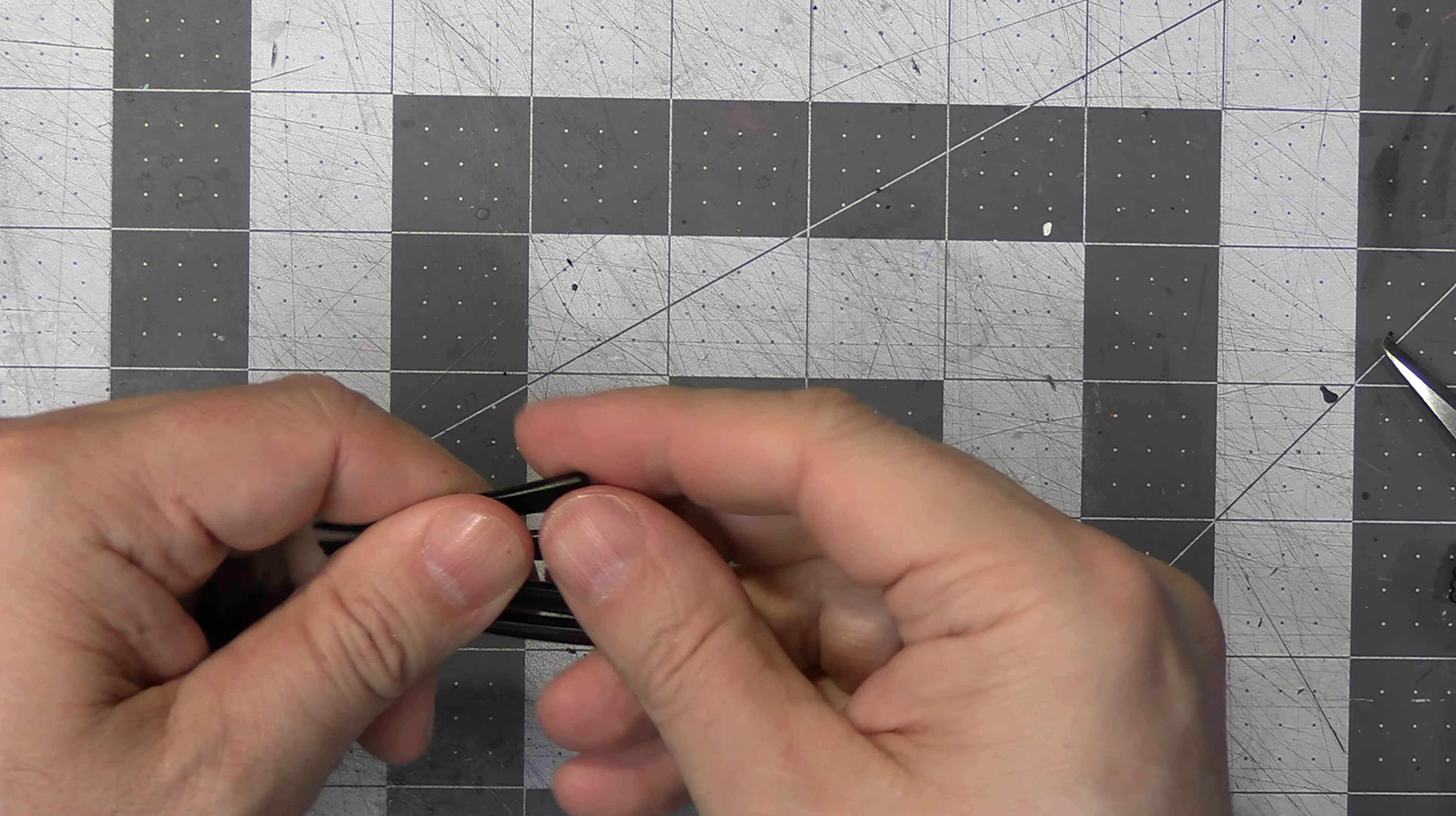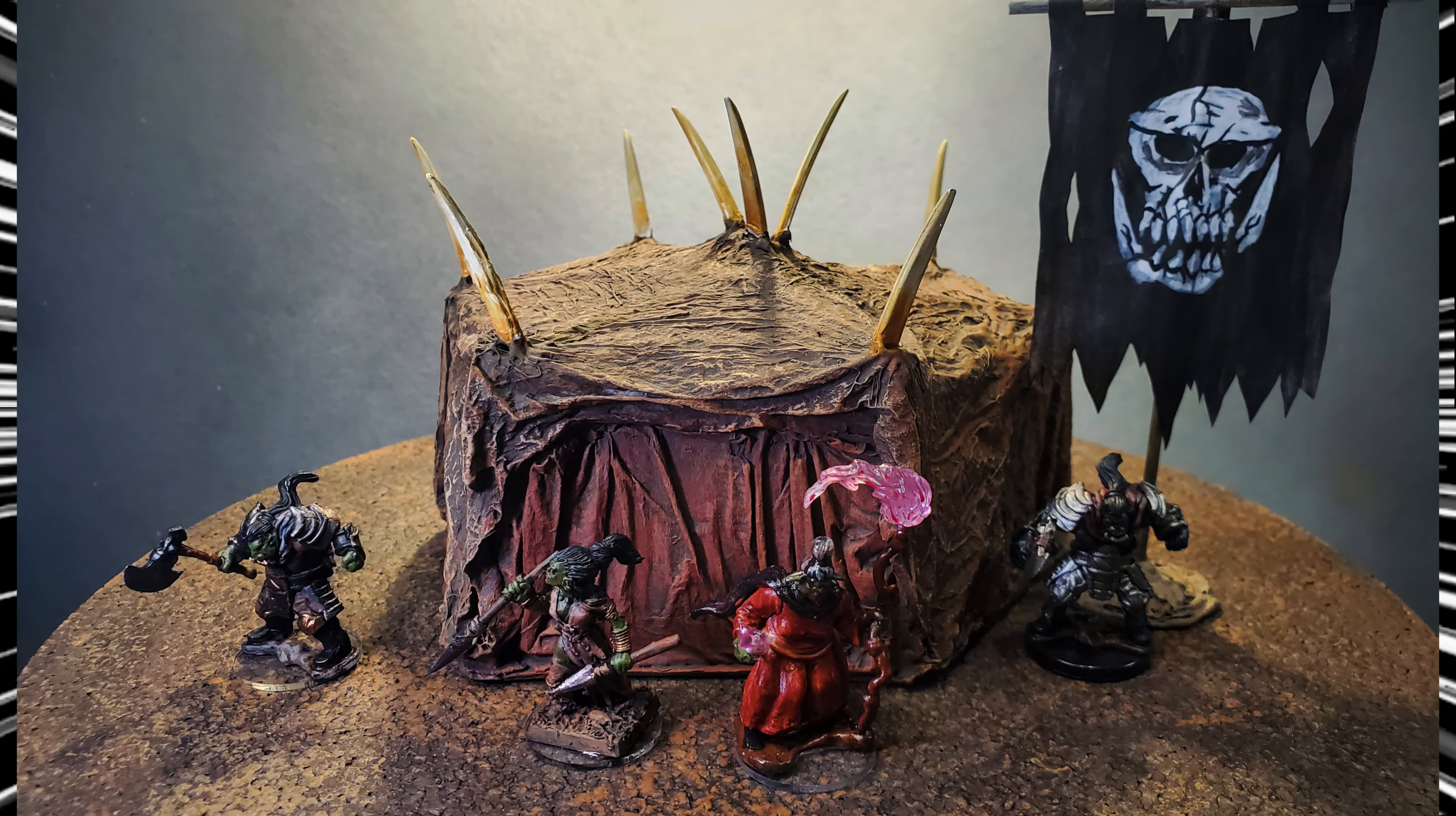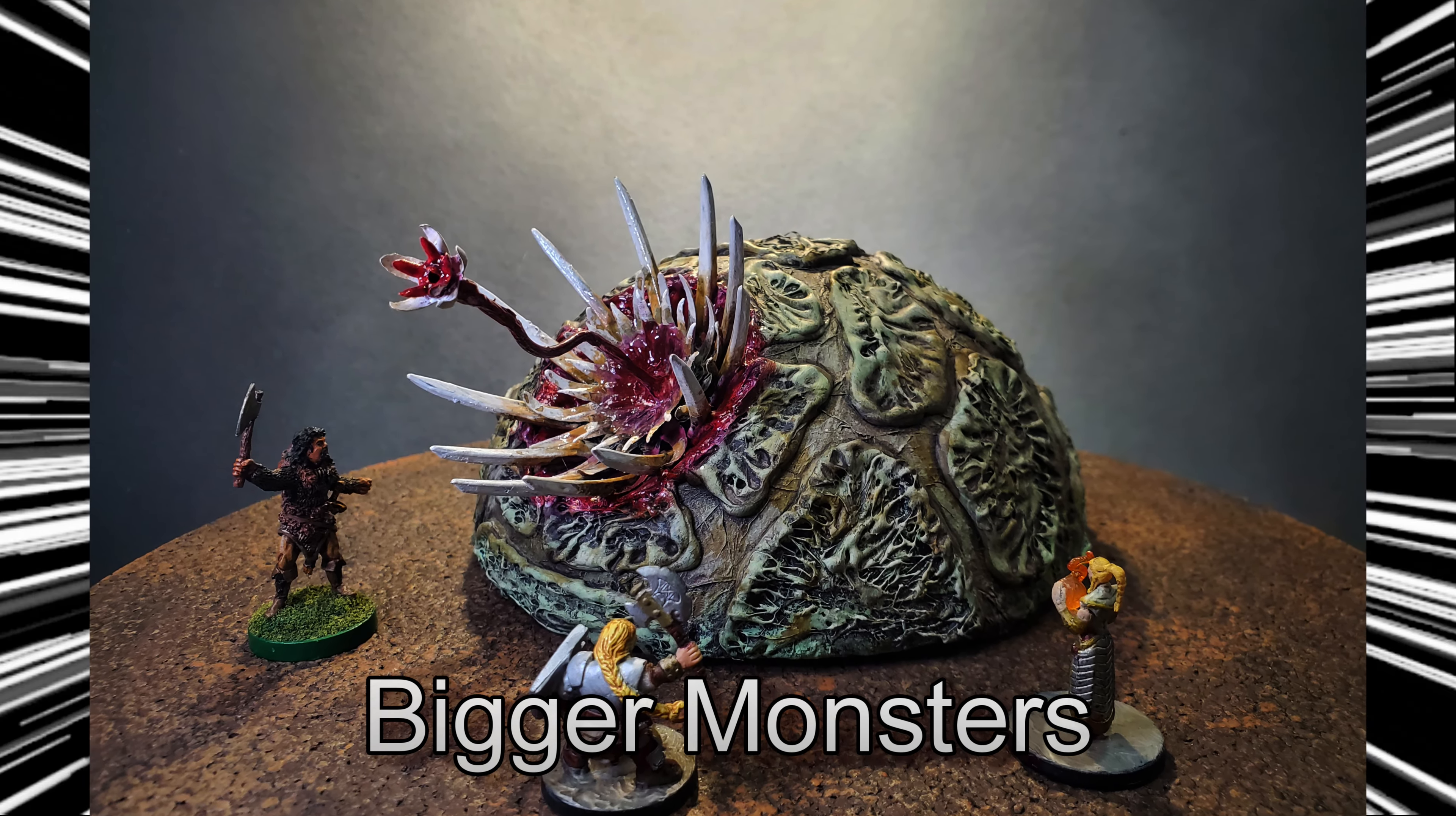Now let me show you some examples of what you could use these for. Bones on orc tents. Monsters. Even bigger monsters. Rawr.